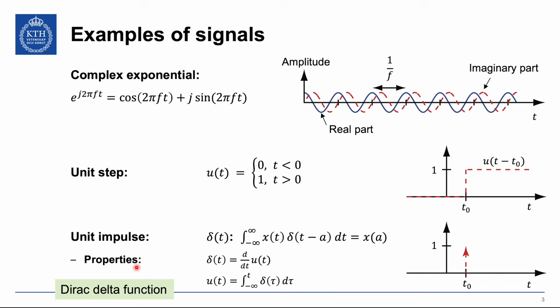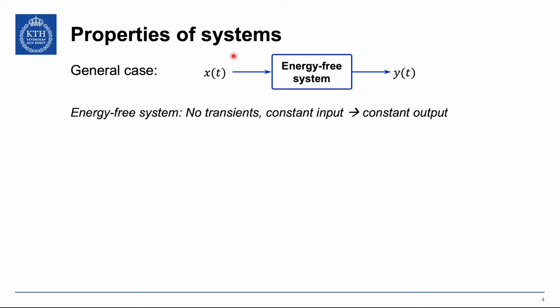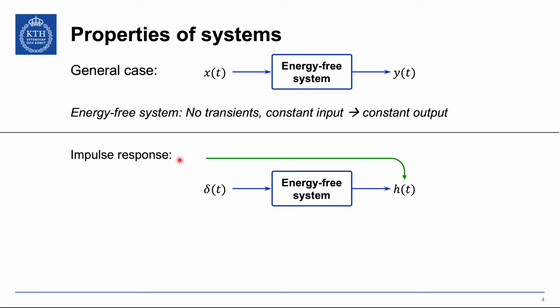Let us now have a look at systems. A system in the general case is something that takes an input signal and provides an output signal. An energy-free system is one where there are no transients in the system affecting the output on its own — it is the input that determines the output, so if the input is constant the output is constant. The impulse response is what you get when you send a unit impulse into an energy-free system. Everything that is happening inside the system is determined entirely by this impulse response.